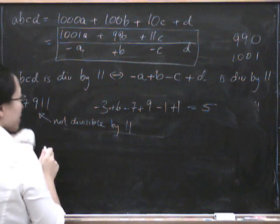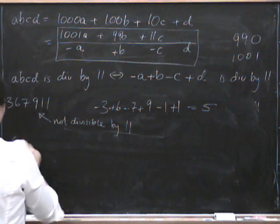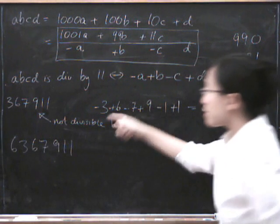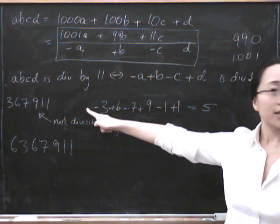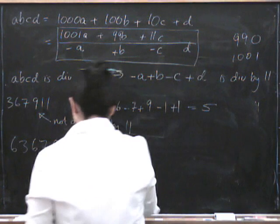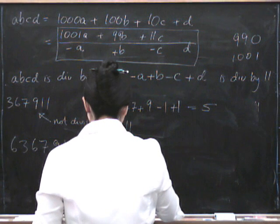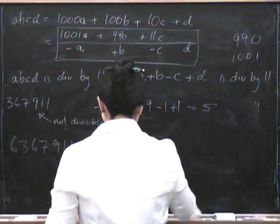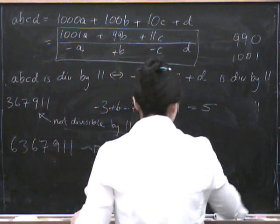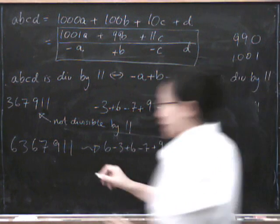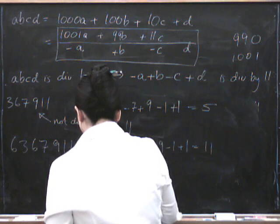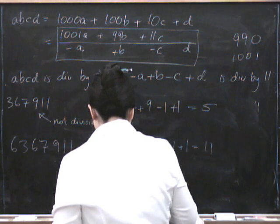Of course, if I then stuck a 6 on at the beginning, 6, 3, 6, 7, 9, 1, 1, then I've got the same sum up here with an extra 6 at the beginning. So that one will come to 11. 6 minus 3 plus 6 minus 7 plus 9 minus 1 plus 1 equals 11. So this one is divisible by 11.